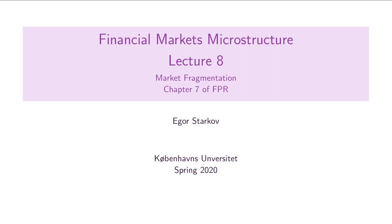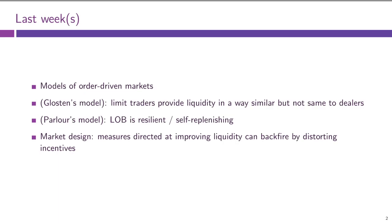Today we'll be talking about market fragmentation. As usual, let us start with a quick recap of what happened last time. In the past couple of weeks we have been looking at order-driven markets. We looked at Glosten's model — a simplified collection of examples — and this model taught us that limit traders act as liquidity providers, similar to how a dealer behaves, but not quite the same way.